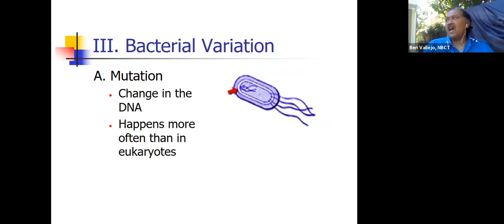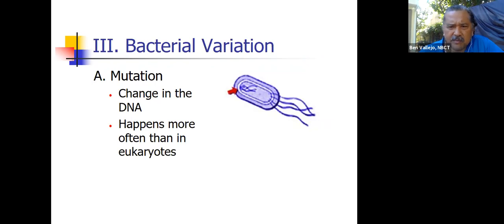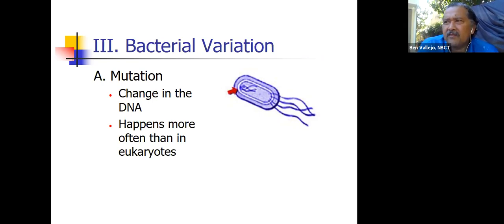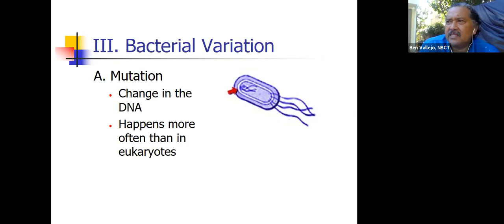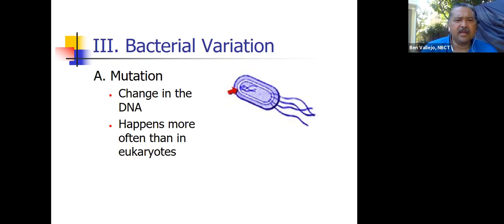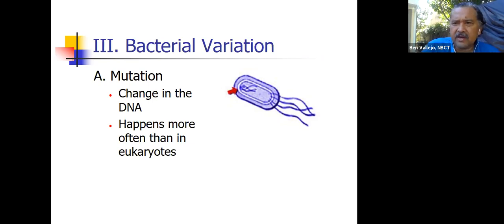This is section three on bacteria variation. Bacteria mutate very rapidly because their DNA is small and not protected — it's not in a nucleus. It happens more often than in eukaryotes that bacteria mutate. Any change in the DNA is called a mutation. Things mutate all the time, but very seldom does a mutation cause harm, and even more seldom does a mutation cause good. The mutation rate is so much greater in prokaryotes compared to eukaryotes.